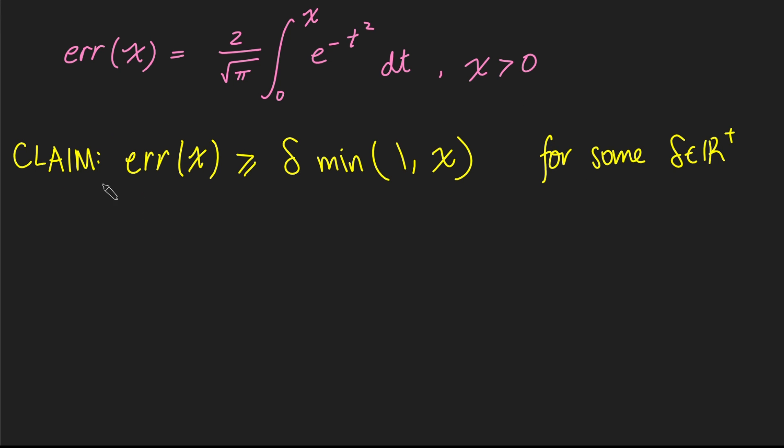And today we're going to be proving this claim, that error of x is at least delta times the minimum of 1 and x, where delta here is just some fixed constant, which is a positive real number, which we'll work out in the proof of this.